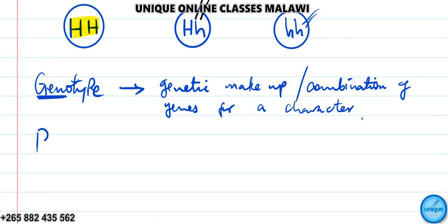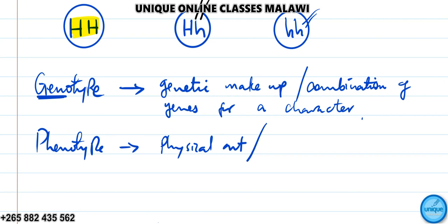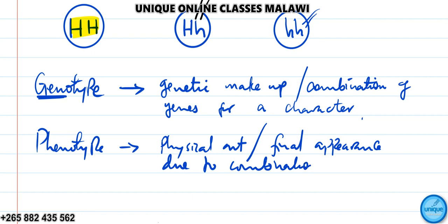While phenotype is defined as the physical outlook — the fine appearance — due to the combination of genes. So phenotype is the outward physical appearance that results from the combination of genes an organism has.